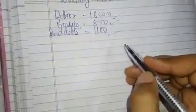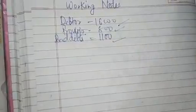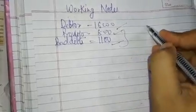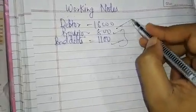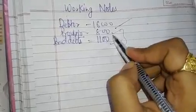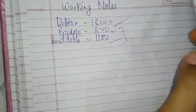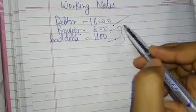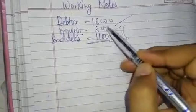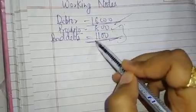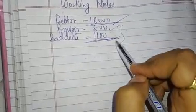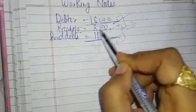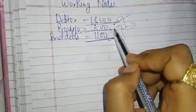तो इस ₹1,100 को कैसे adjust करना है? Debtors ₹16,000 के हैं। Provision क्या होता है — जैसे आपने Class 11 में भी पढ़ा था — future में कोई ऐसा debtor ना हो जो payment ना करे। तो यहाँ ₹16,000 में से ₹1,100 के ऐसे debtors हैं जो payment नहीं करेंगे। उससे बचने के लिए हमने पहले ही ₹800 का provision create किया हुआ है।